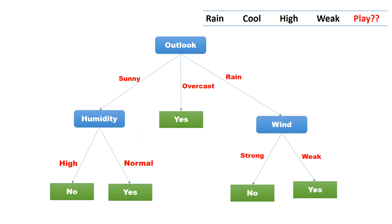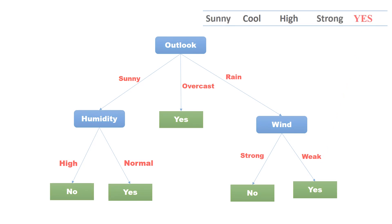Here is the final decision tree. The tree can now be used to classify new records. Assume we have a record with values rain, cool, high, and weak. What is the play prediction for the day? Start with the root node. Outlook has value rain, so follow the branch with label rain. The next decision node is wind. Wind has value weak, so follow the branch with weak. It is a leaf node: yes. Hence, the record is classified as yes.